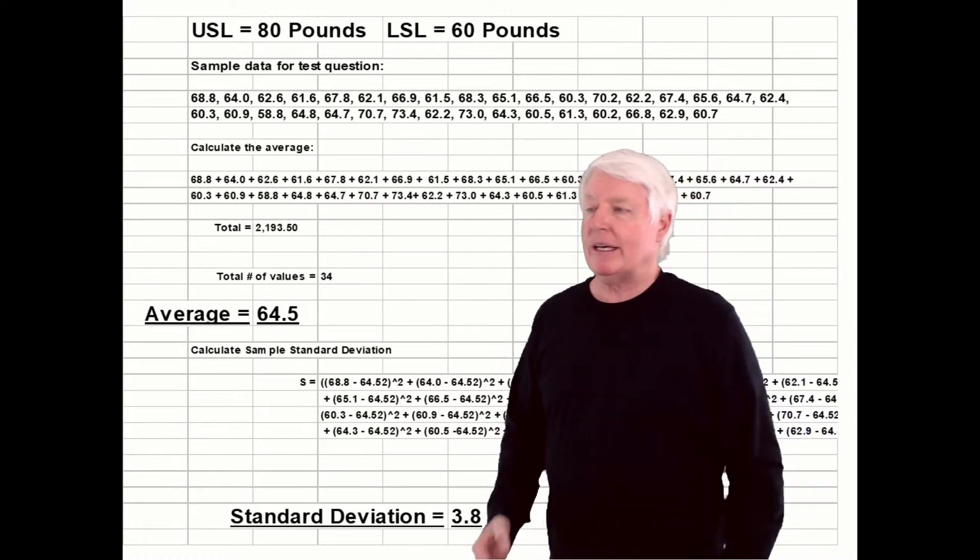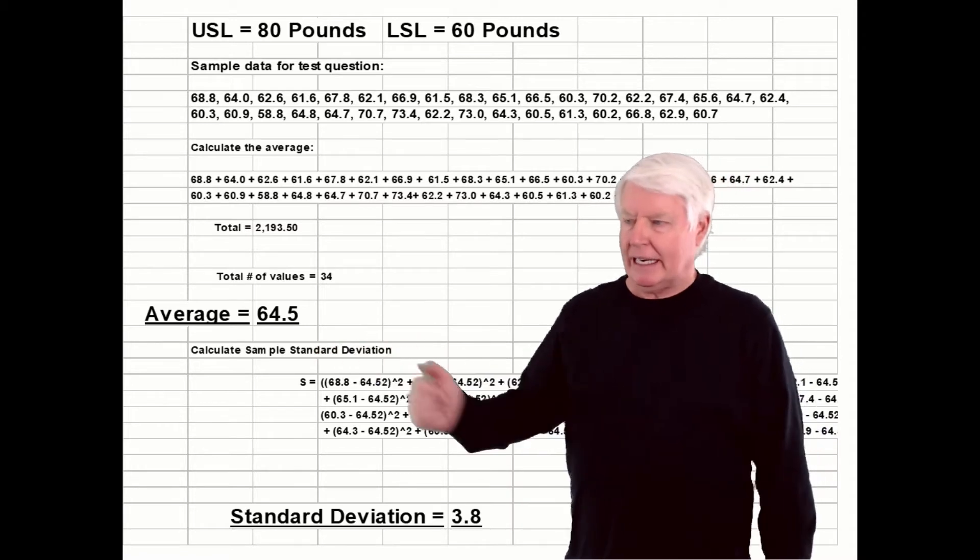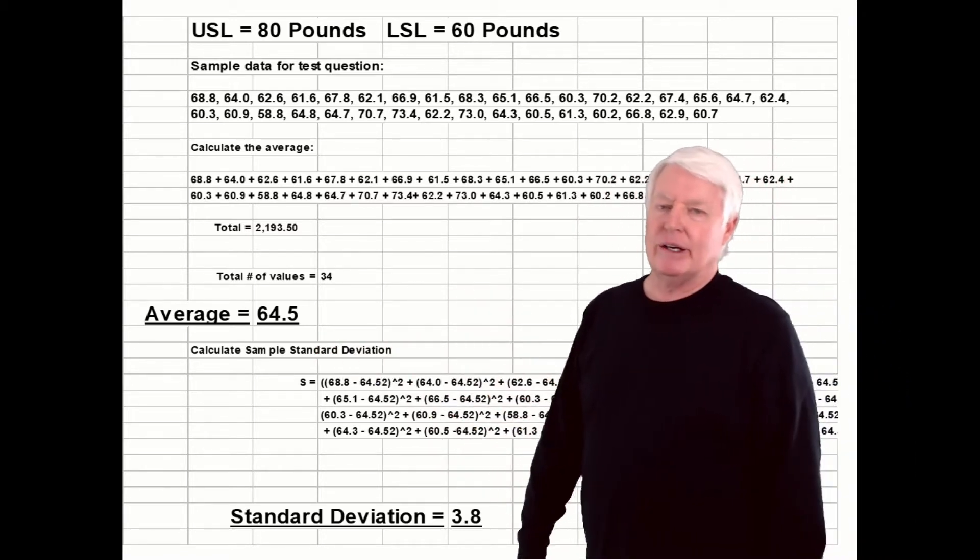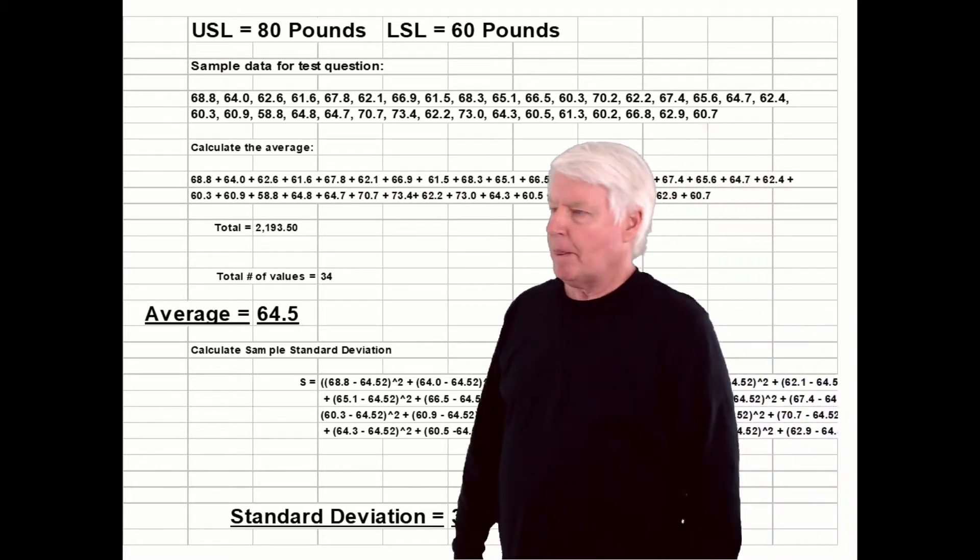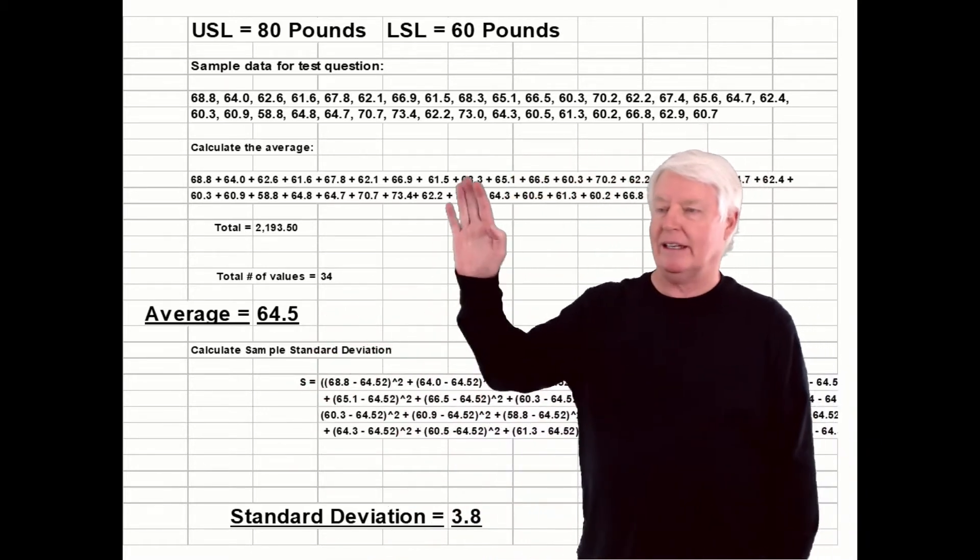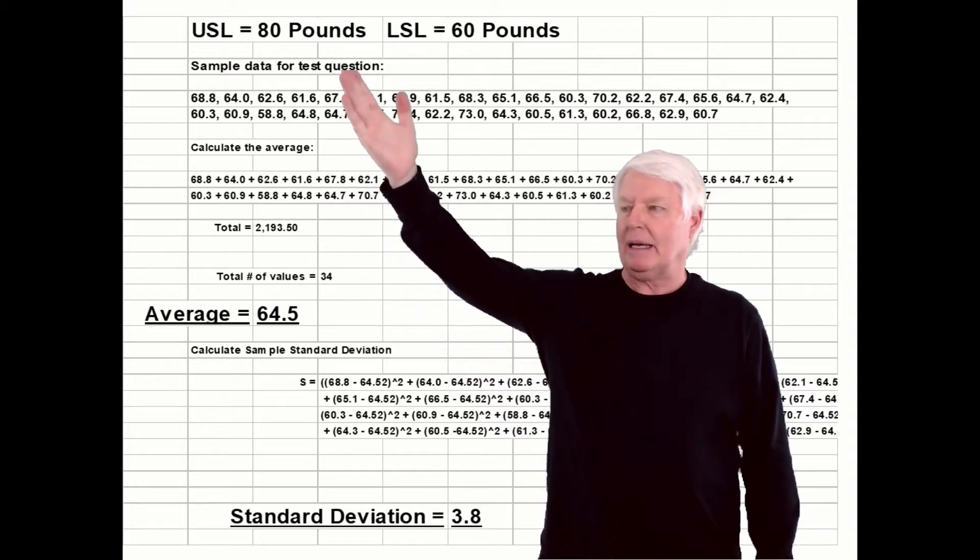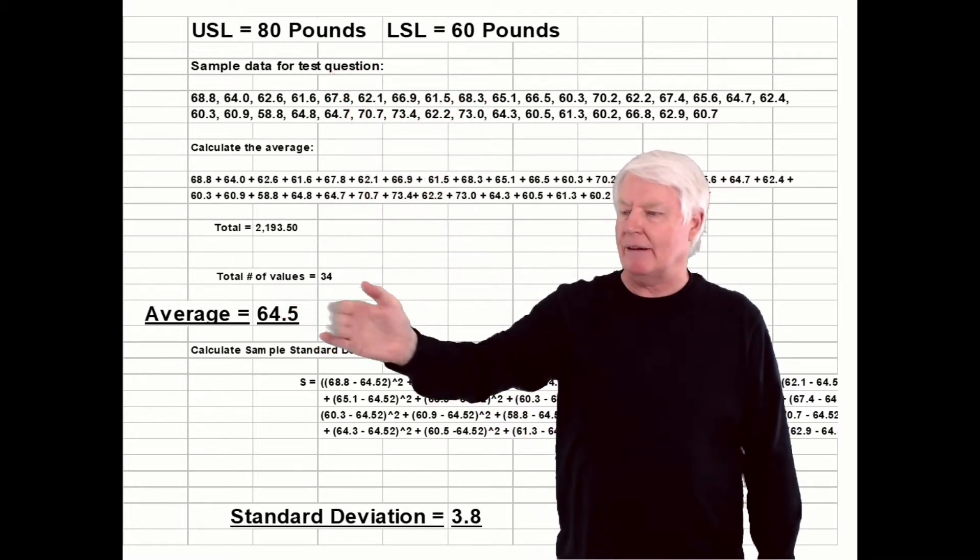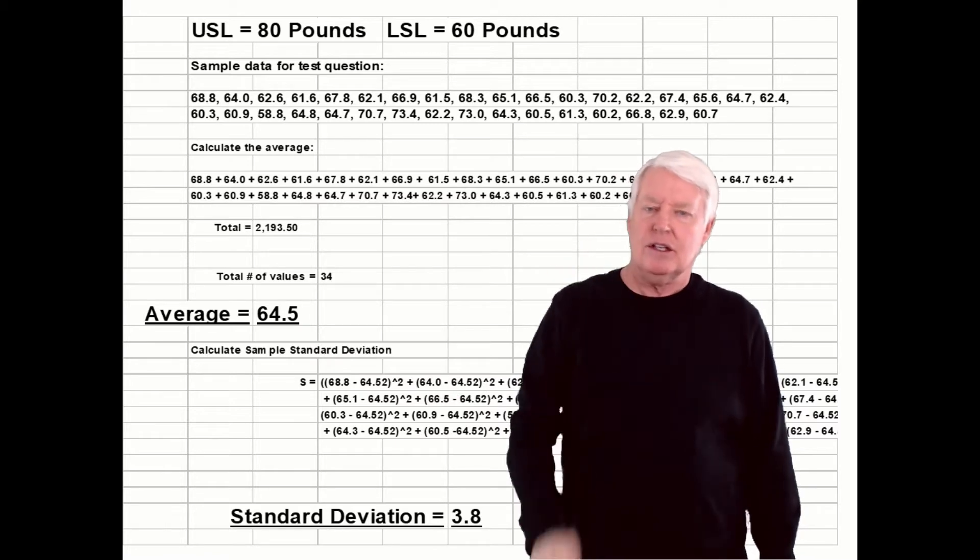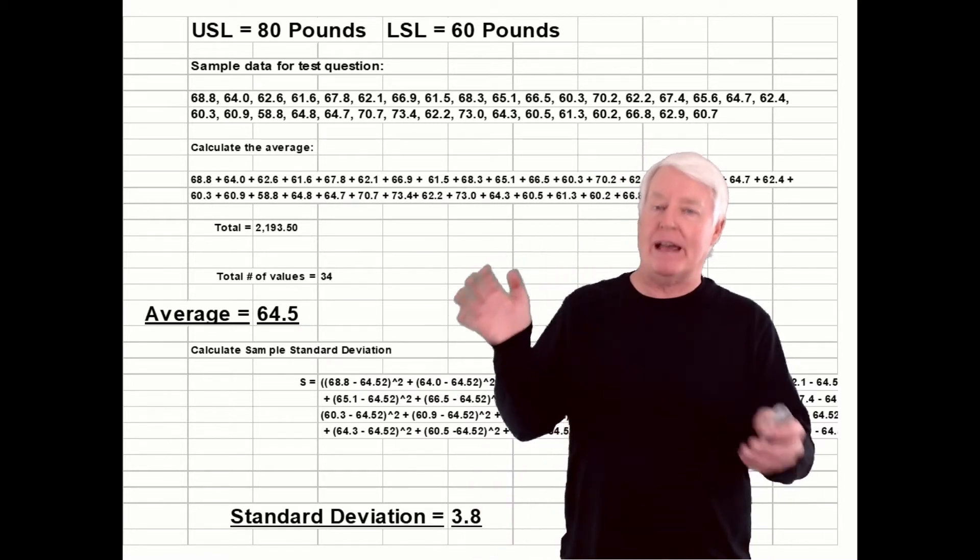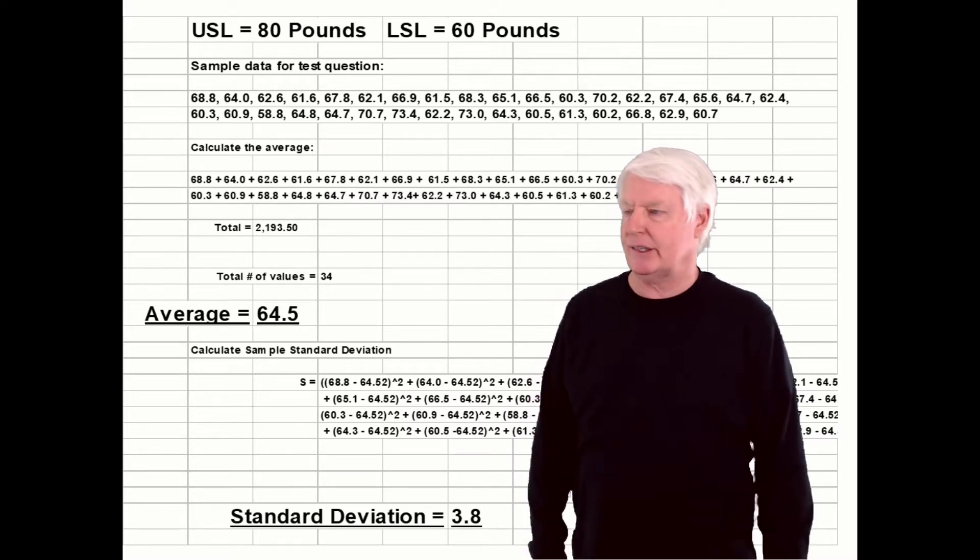In a capability study, you always need upper and lower spec limits, an average of the process distribution, and the standard deviation of that distribution. Once you have those numbers, there's only four numbers, so it can only be so complex. Upper spec limit, lower spec limit, average, standard deviation. Those are the only four numbers you will need to calculate the whole family of CPK statistics.